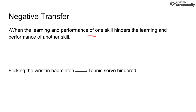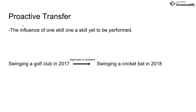The opposite of that is called negative transfer. This is when the learning and performance of one skill hinders the learning and performance of another skill. This often happens when a performer moves into a different sport. For example, in badminton you have to flick your wrist on almost any shot, whereas in tennis you have to keep your arm up with your hip forward and use a lot of strength. So flicking the wrist from badminton could hinder your tennis serve when you move into tennis.